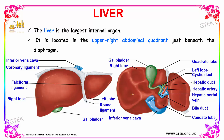In the posterior view of your liver, you can see the gallbladder, the right lobe and the left lobe, and the inferior vena cava. Your hepatic duct, hepatic artery, and hepatic portal vein can also be found in this view.